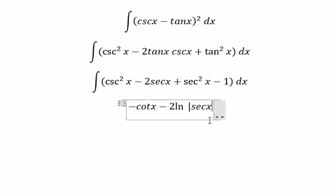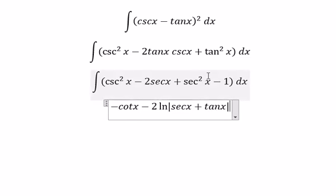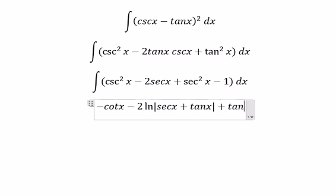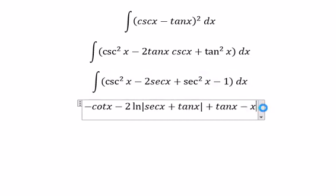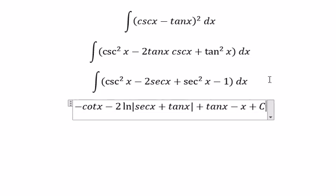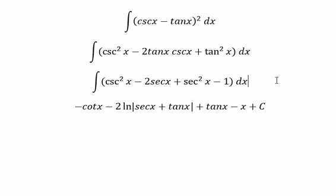The integral of secant squared s, you got tan s. The integral of 1, you got s, and we put C for the constant. That's it.